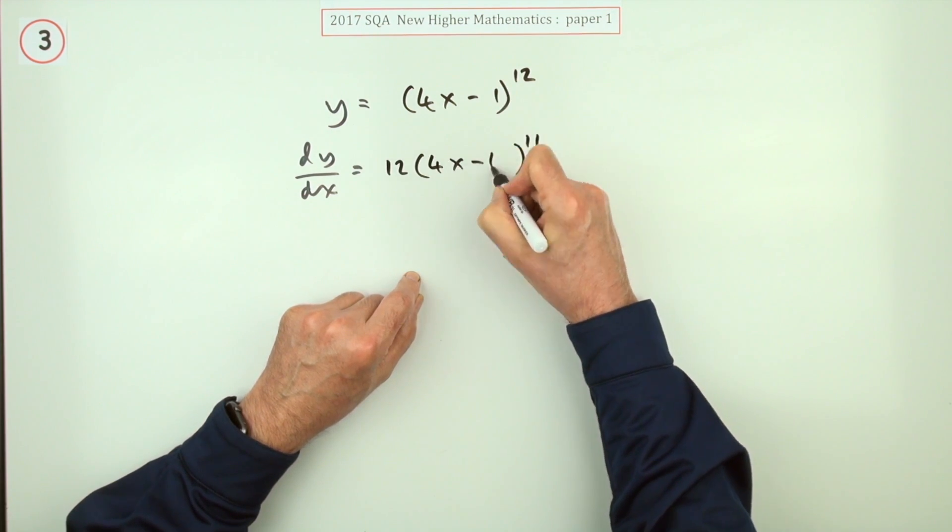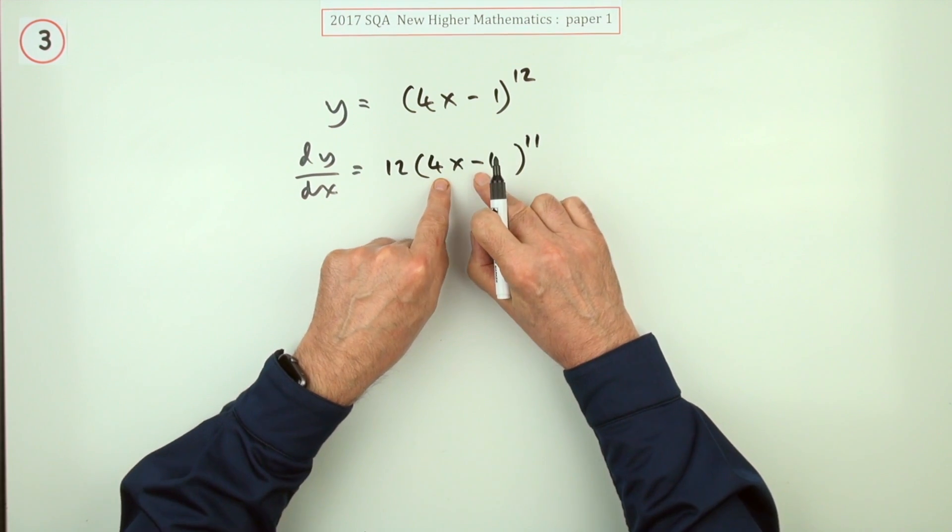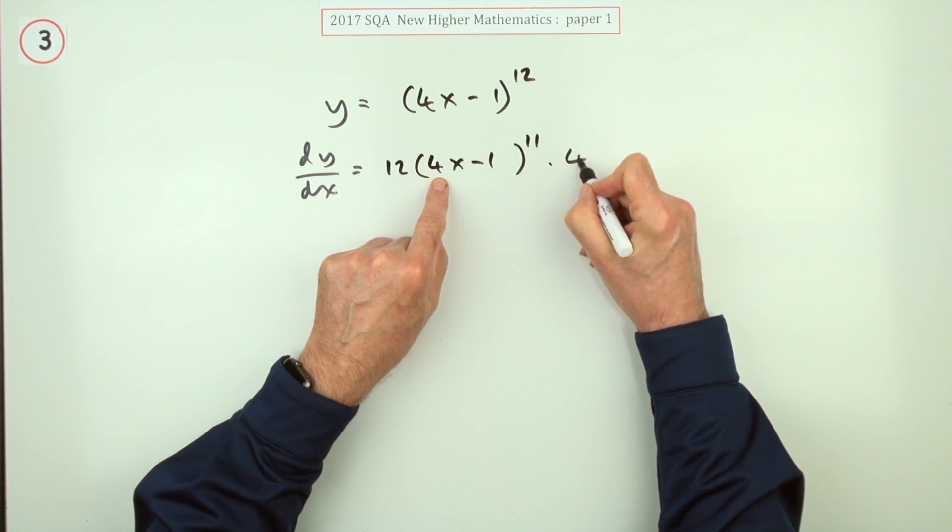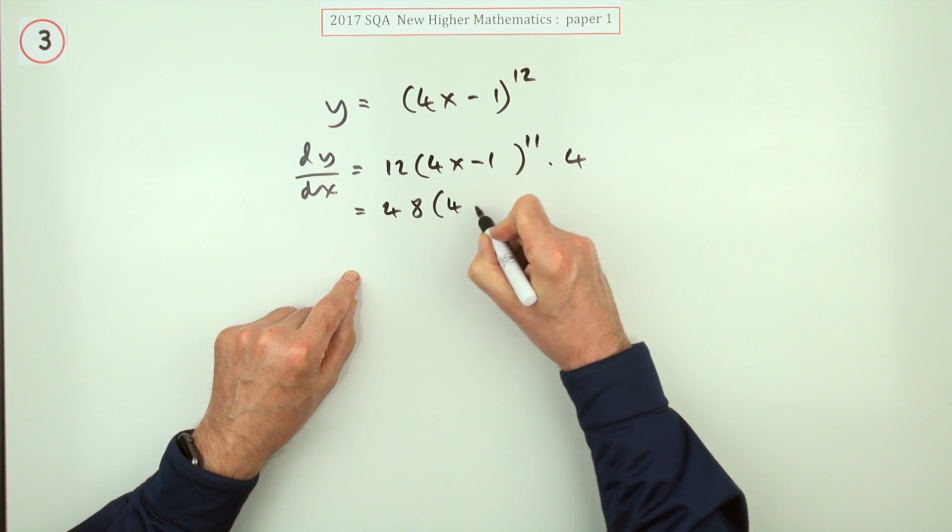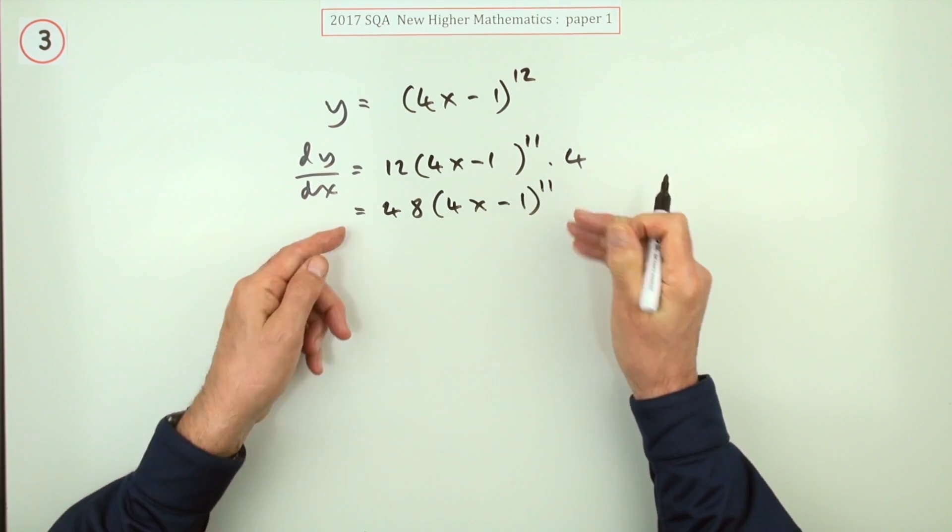Now what was inside it? It was 4x minus 1, so multiply by the derivative of this, which is just 4. And tidy up: 4 times 12 is 48, and there's nothing else you can do because that's it done.